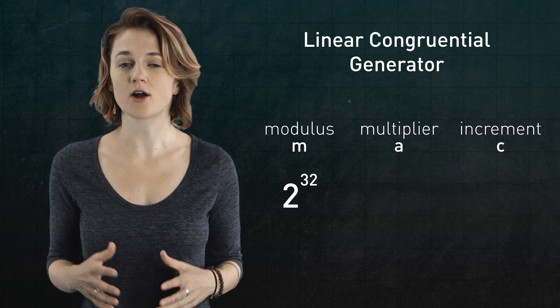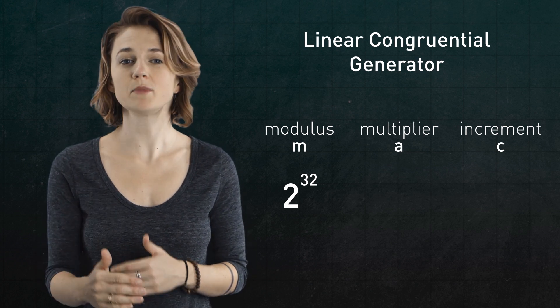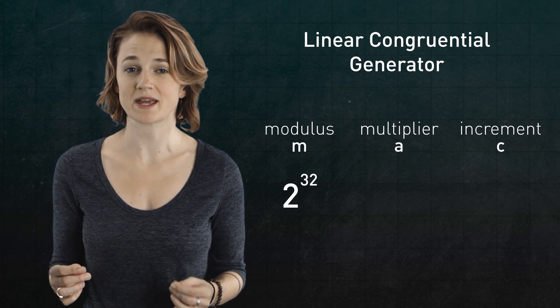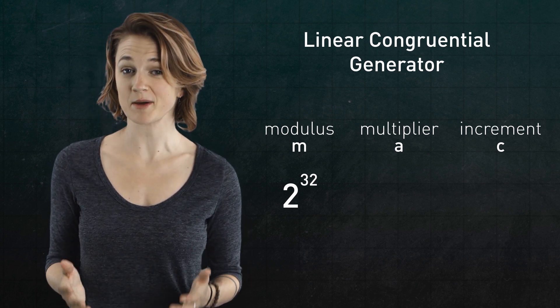In general, the linear congruential generator will run for much longer before repeating than the middle square algorithm, which is one feature that makes it a more preferred pseudorandom number generator.